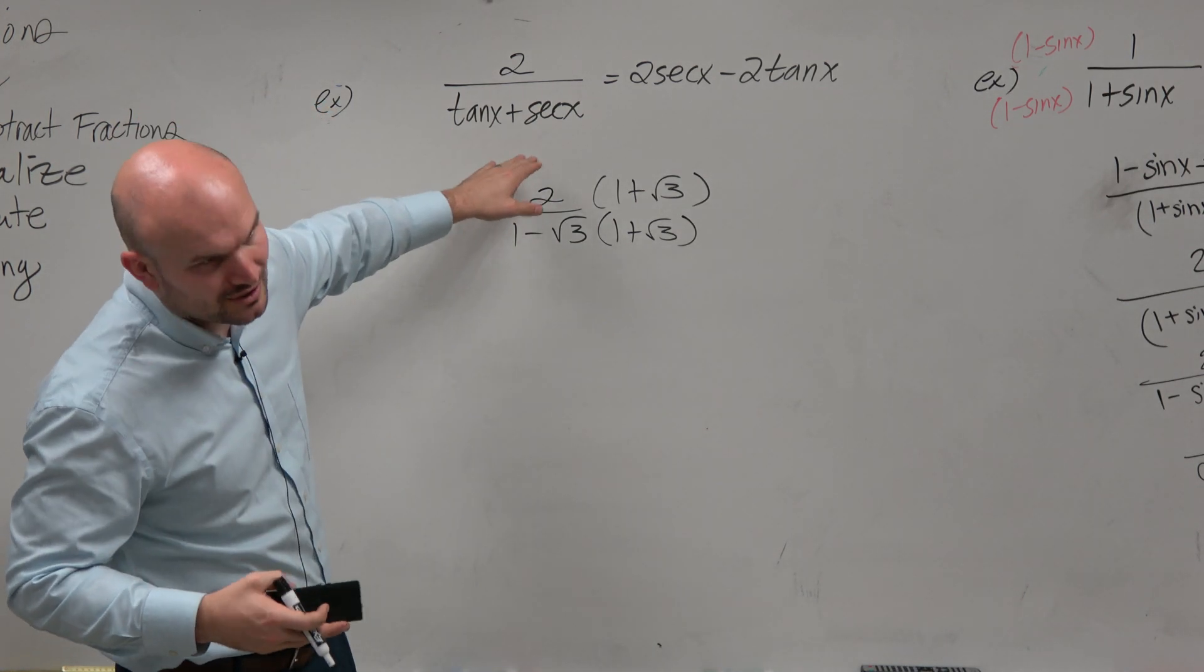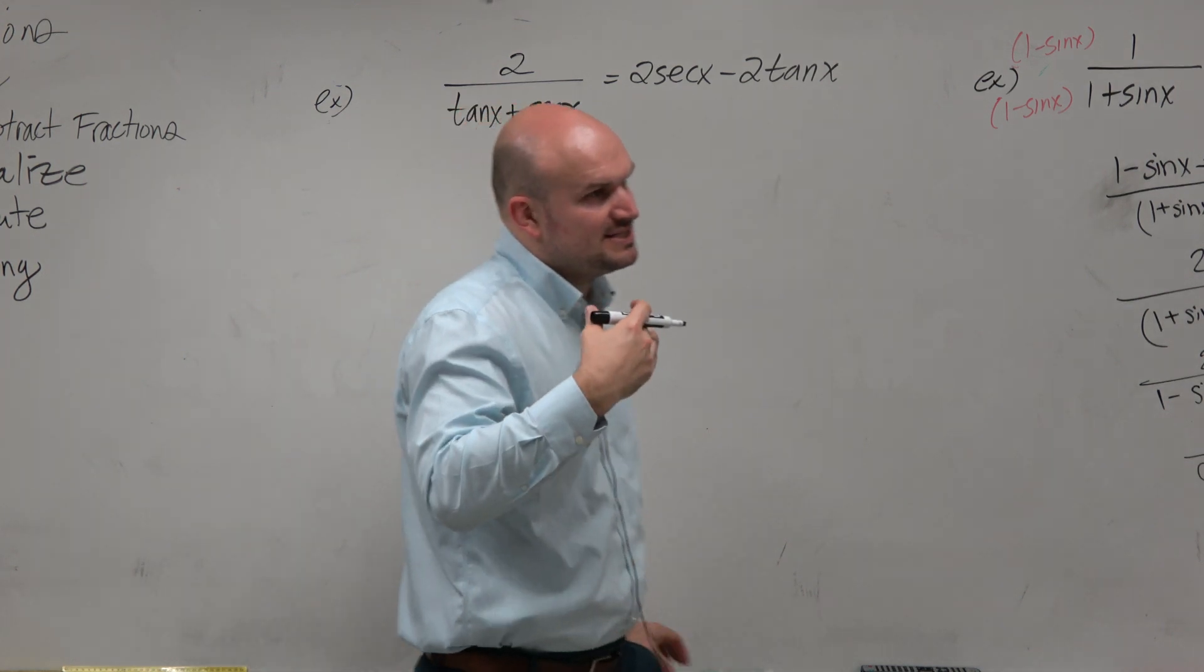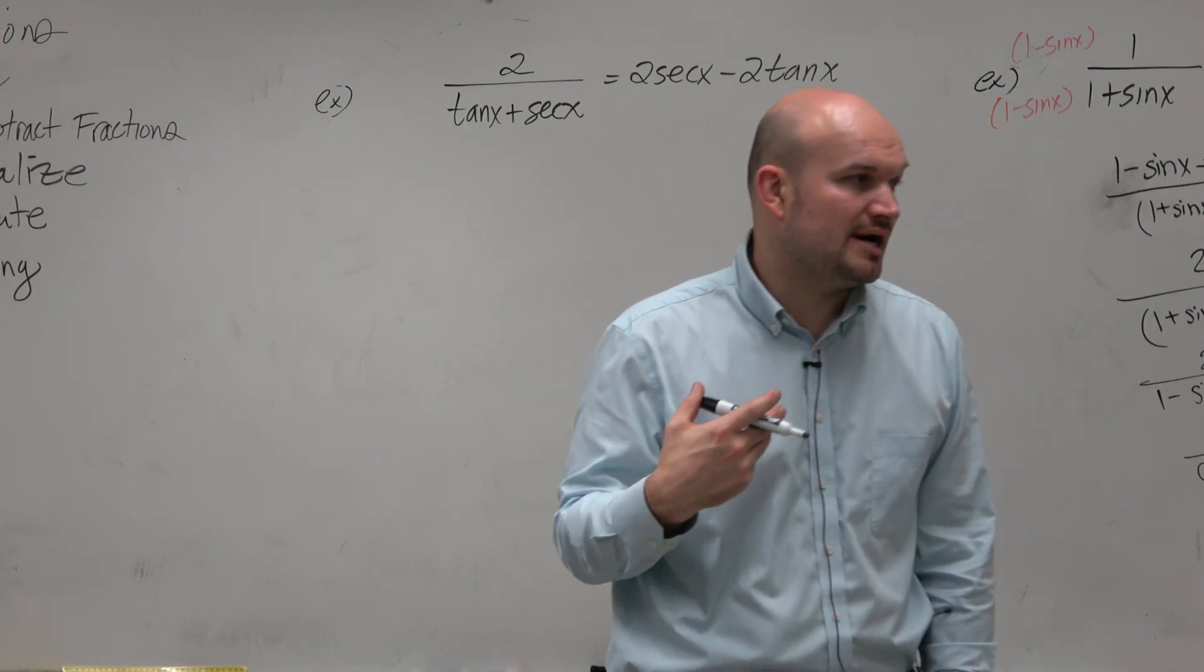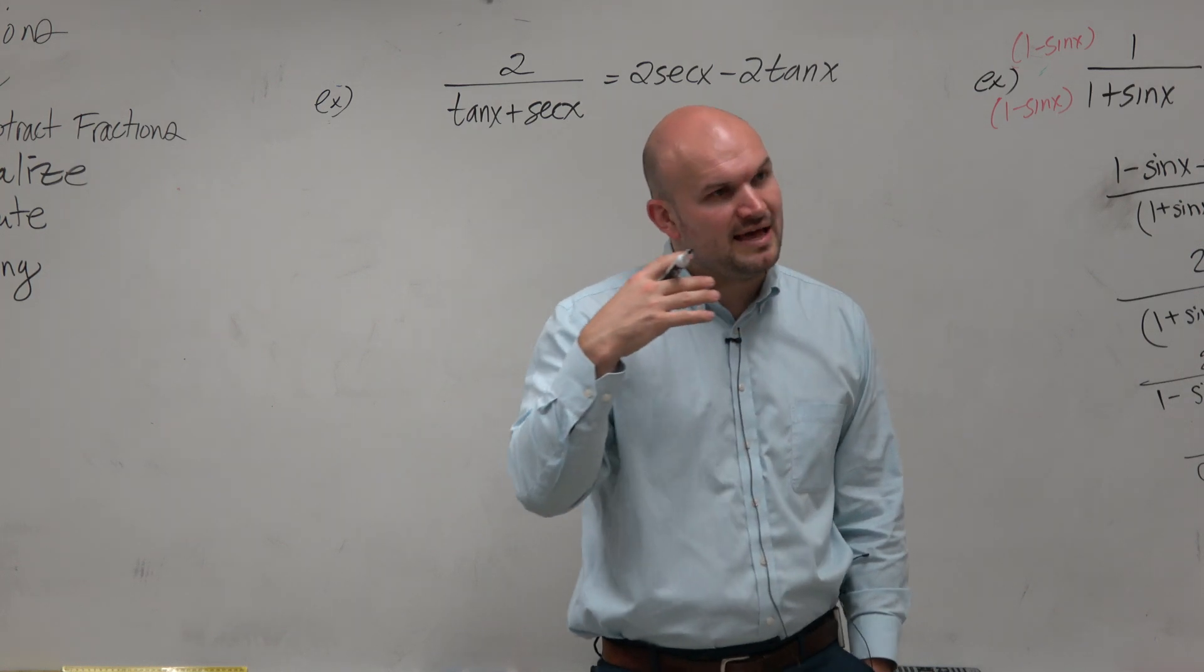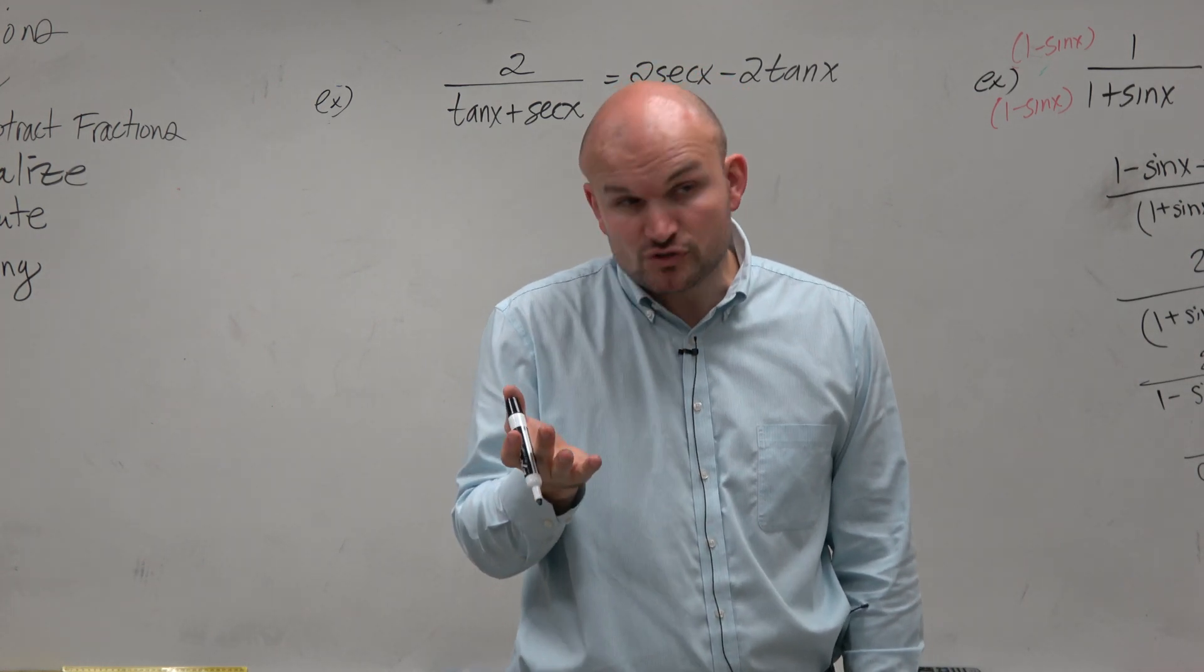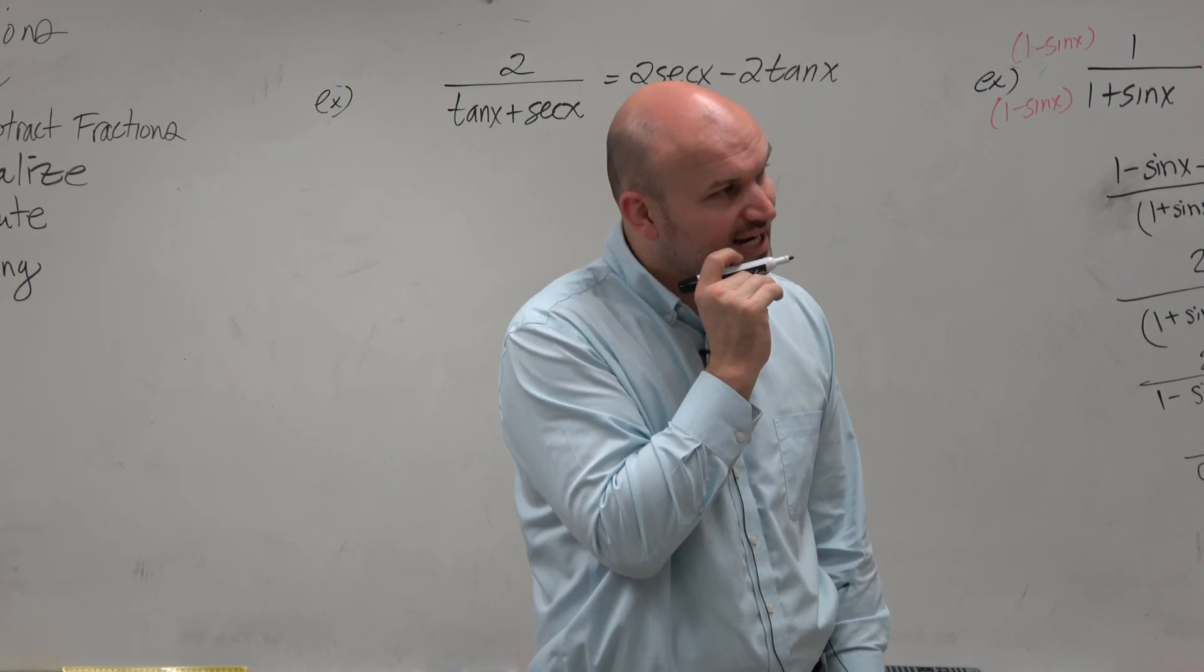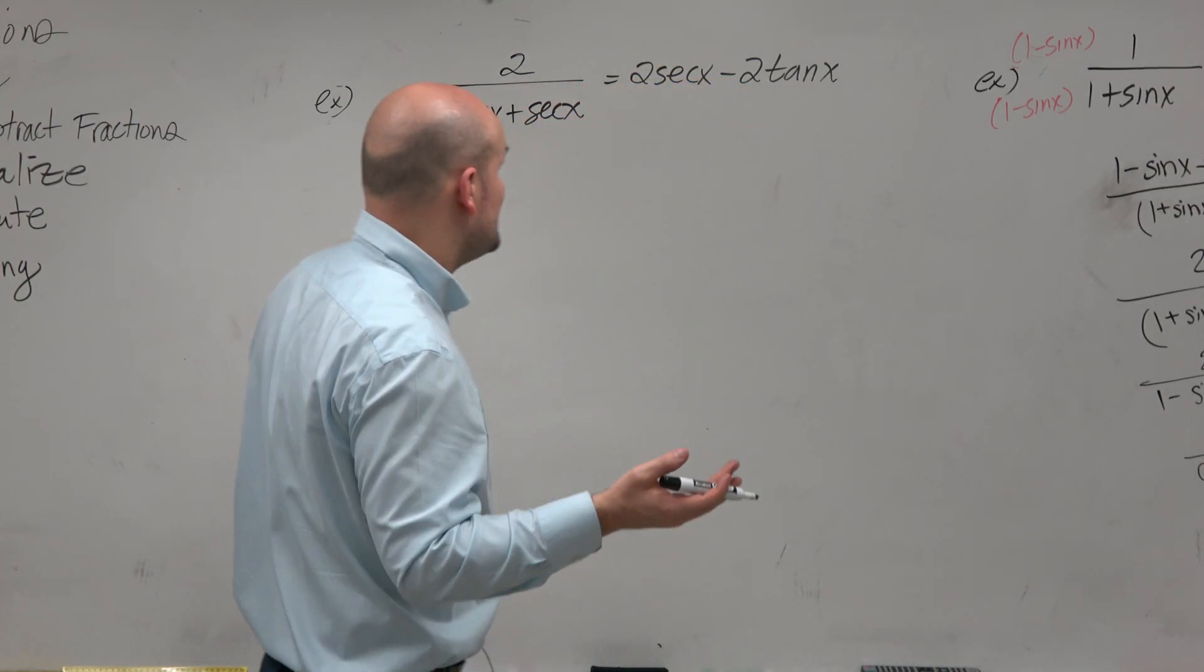Now, we don't have a radical here in the denominator. But what can happen is if we multiply it by its conjugate, which will create a difference of two squares, then by creating a difference of two squares, we can possibly use the Pythagorean identities. Again, this doesn't work for every problem. Not every problem is set up this way, but for some problems it does.